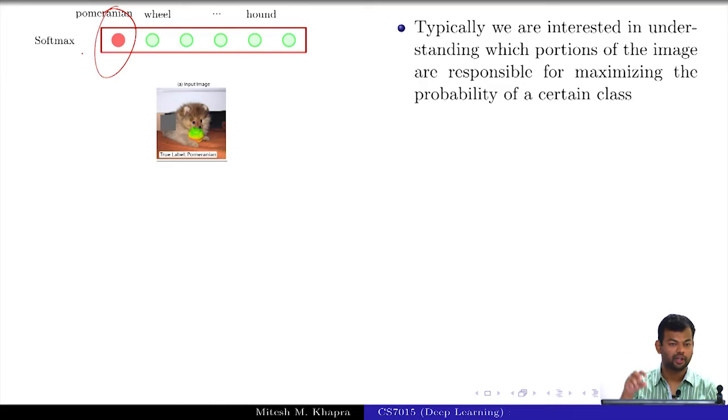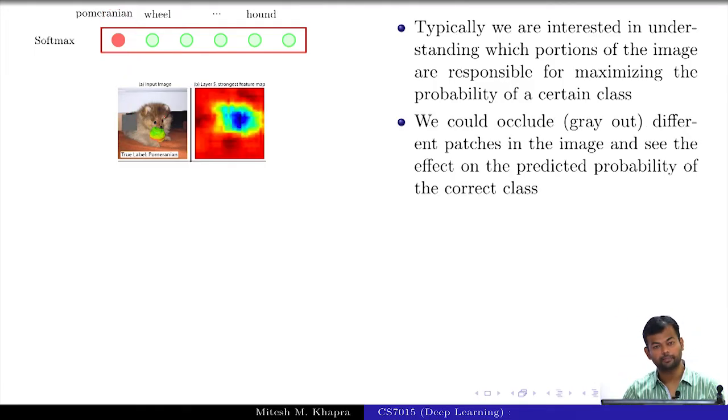It's a similar thing that you do here. You occlude certain patches of the image. I have shown one occlusion here. I have replaced that patch by a grey patch and I again feed the image to the convolutional neural network and I see what is the probability of the Pomeranian class right now. I do it for all such patches in the image, as many patches as I want, and I create something known as a heat map.